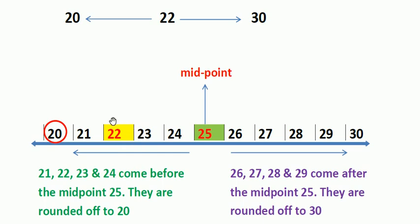Since 22 is before the midpoint 25, we will round 22 to 20. You can see that 22 is closer to 20. The numbers 21, 22, 23, and 24 come before the midpoint 25, so we round them off to 20. The numbers 26, 27, 28, and 29 come after the midpoint, so we round them off to 30. Therefore, we round off 22 to 20.